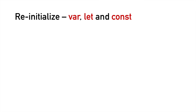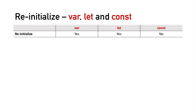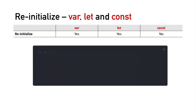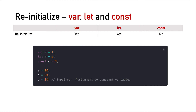Now lastly, in terms of re-initialization, we can re-initialize var and let variables, whereas we cannot re-initialize variables declared with const. To verify this, we declare three variables 'a', 'b', and 'c' using var, let, and const with values 1, 2, and 3 respectively. When we re-initialize 'a' to 10, we successfully change the value without any error. When we re-initialize 'b' to 20, we again successfully update the value without error. But when we try to re-initialize 'c' to 30, we get a TypeError: assignment to a constant variable is not allowed. Therefore, we have verified that we can re-initialize variables created with var and let, but we cannot re-initialize a variable created with const.